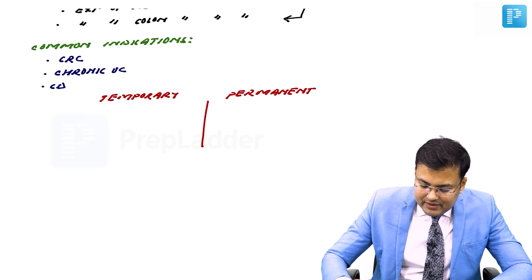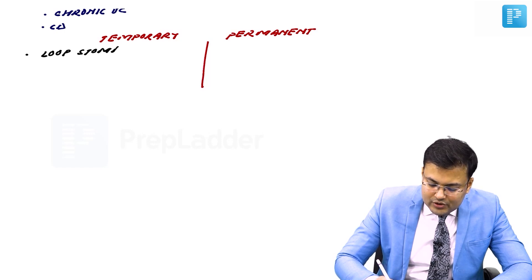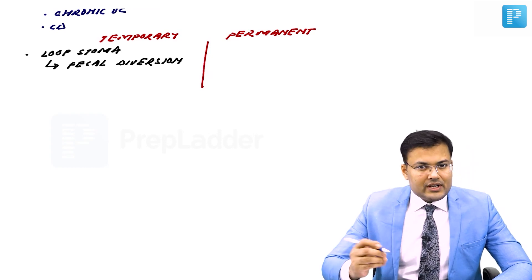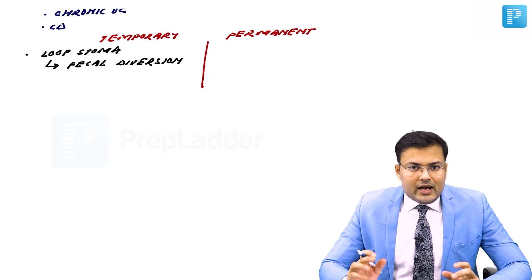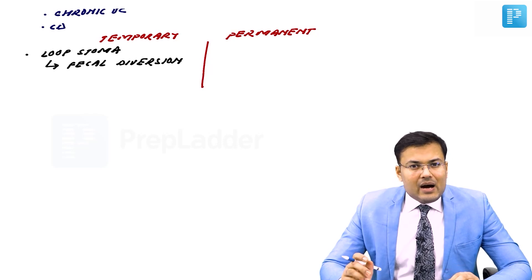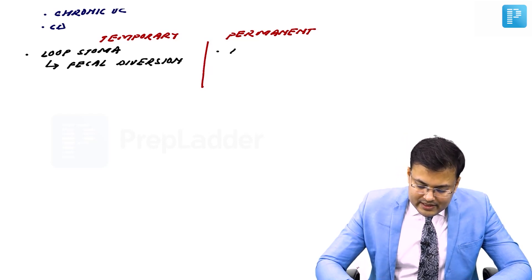Temporary stoma is generally loop stoma, created for fecal diversion to protect a distal anastomosis. For example, a patient with carcinoma sigmoid colon undergoes sigmoidectomy and we go for colorectal anastomosis. To protect this colorectal anastomosis, we create loop ileostomy. Permanent stoma is generally end stoma.